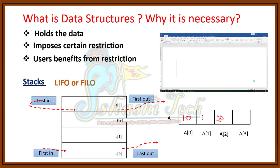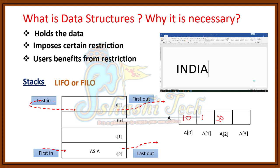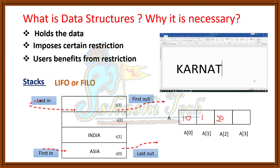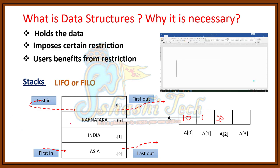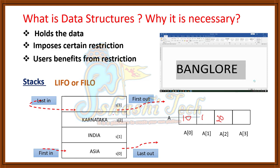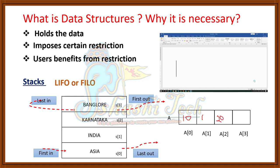Suppose I write the text 'Asia' and delete it — it is stored at the 0th position of the stack. Second text is 'India', after deleting it is stored at the 1st position of the stack. Third text is 'Karnataka', after deleting it is stored at the 2nd position. Fourth text is 'Bangalore', after deleting it is stored at the 3rd index of the stack.